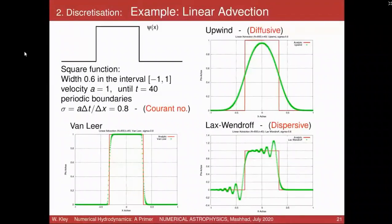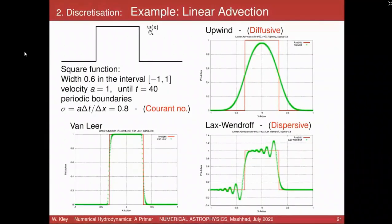Now we come to the project. The linear advection problem using first order and second order upwind schemes: the project has you start with an initial function psi(x) at t=0, given as 1 within the interval minus 0.3 to 0.3, and 0 outside. This is transported with transport velocity A=1 to the right-hand side.